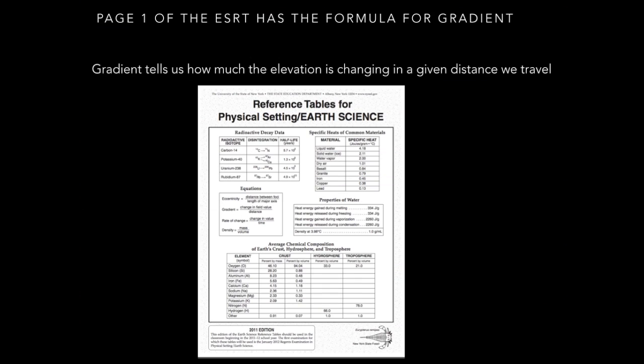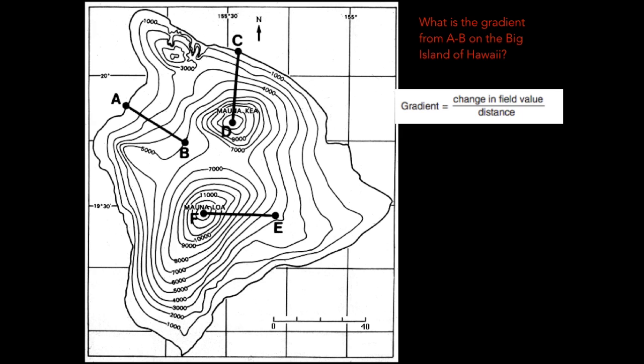Page one of our earth science reference table has the formula for gradient. It's the second formula in our box of equations. We're going to be finding the gradient from A to B on the Big Island of Hawaii in this practice worksheet.